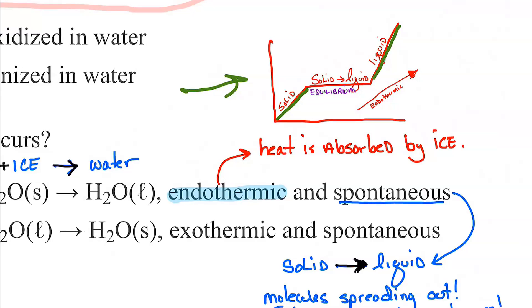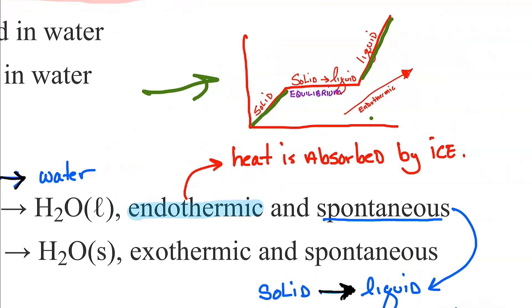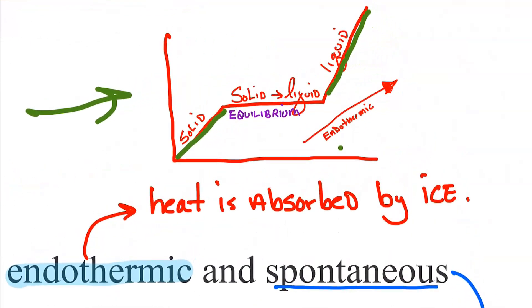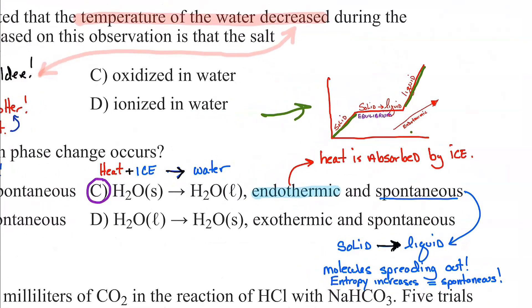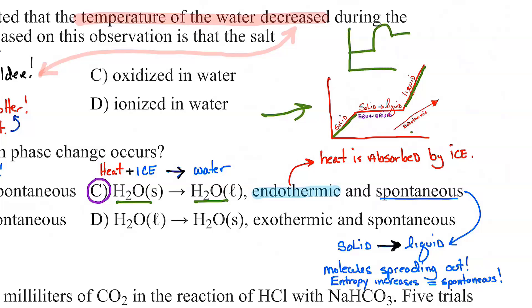In order to climb from solid to liquid, we need energy — that's why melting is endothermic. Water solid going to liquid: liquid has more energy. We're going to a state of higher energy. How do you get to higher energy? You need to absorb energy. So ice requires heat on the reactant side to become water. This is an endothermic process because in order to go from a low-energy solid to a liquid, it's endothermic.